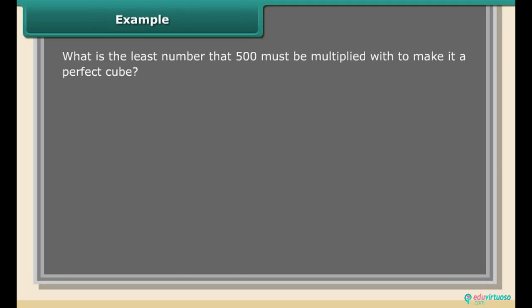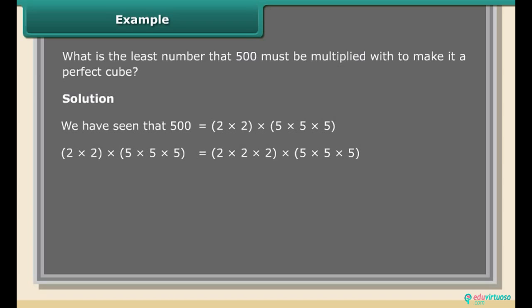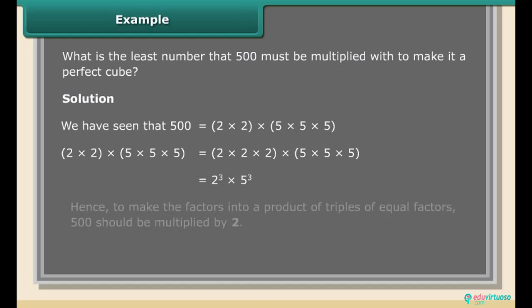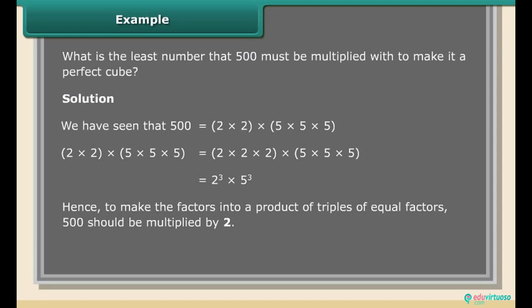Example: What is the least number that 500 must be multiplied with to make it a perfect cube? Solution: 500 = 2 × 2 × 5 × 5 × 5, which equals 2² × 5³. To make all factors into triples of equal factors, 500 should be multiplied by 2.